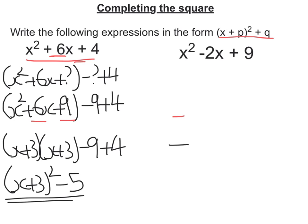Let's look at this second example. So first step put in the bracket with the x squared term, the x term and a plus question mark. And then outside take away question mark and the constant term.